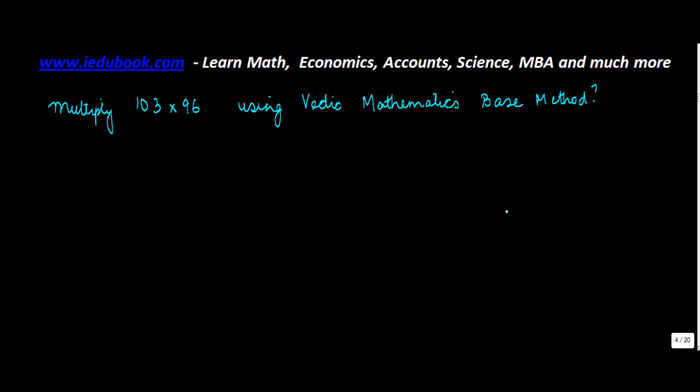Let's do another problem for multiplication using Vedic mathematics. You have two numbers: 103 and 96. The base closest to these two is 100.